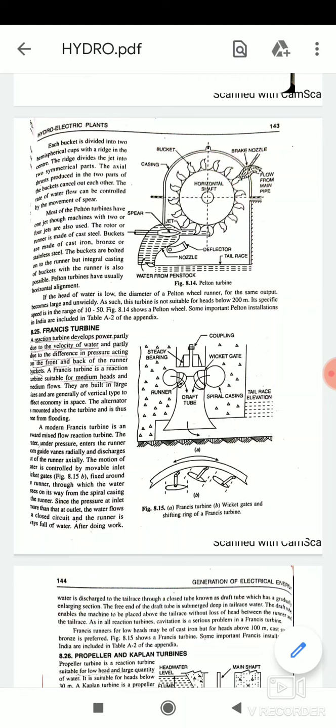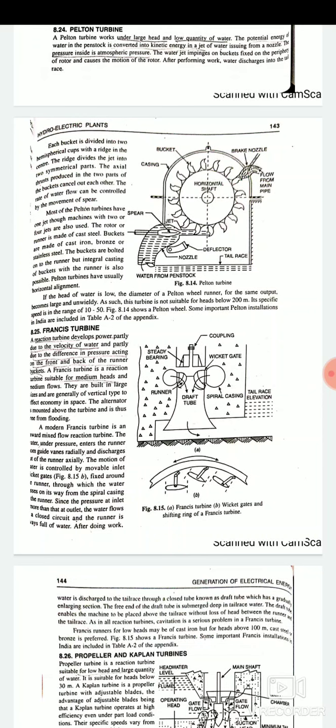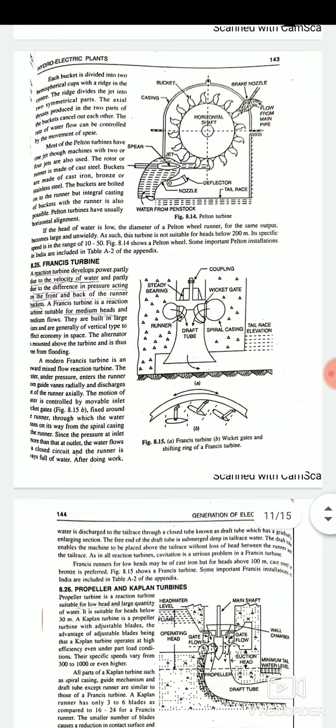Each bucket is divided into two hemispherical cups with a ridge in the center. The ridge divides the jet into two symmetrical parts and the axial thrust produced in the two parts of the bucket cancel out each other. And the rate of water flow can be controlled by the movement of the spear.